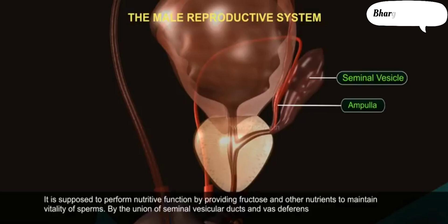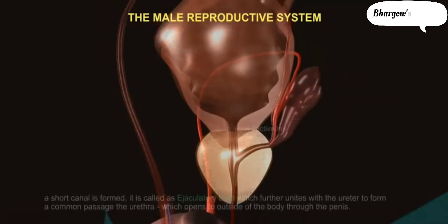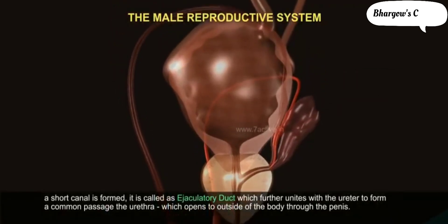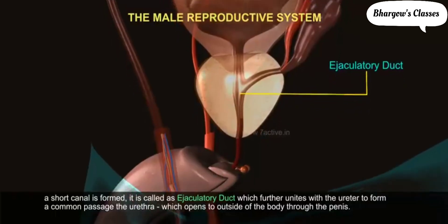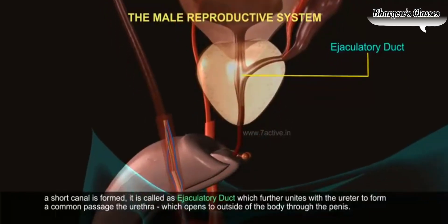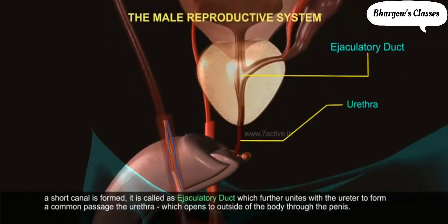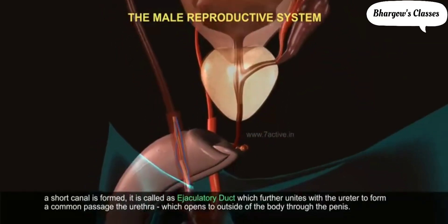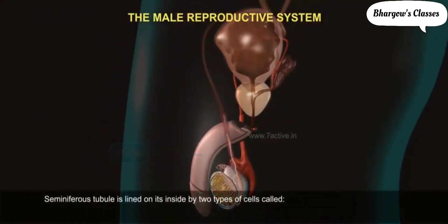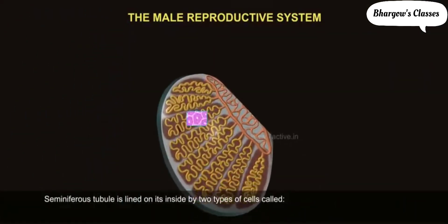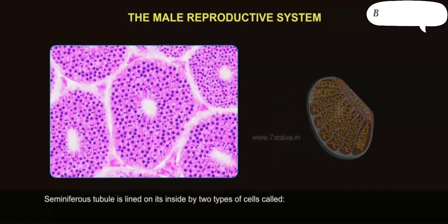By the union of the seminal vesicular duct and Vas Deferens, a short canal is formed called the ejaculatory duct, which further unites with the urethra to form a common passage that opens to the outside of the body through the penis.